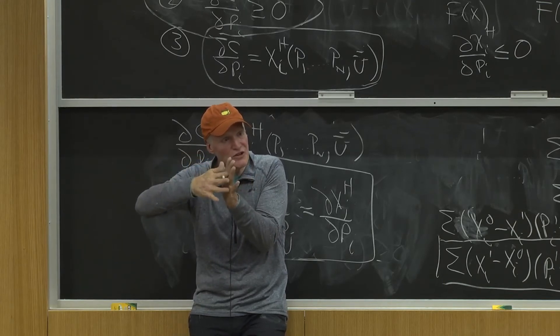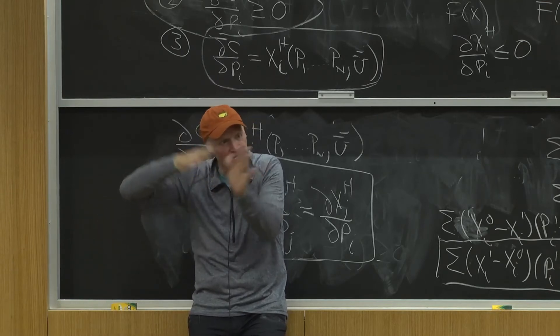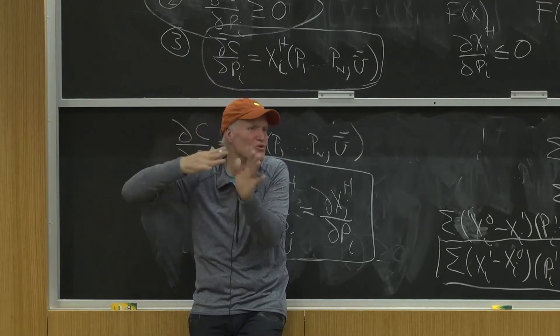When the cost function is very curved, then the indifference curves are much closer to linear. So there's kind of, again, they're sort of duals of one another.